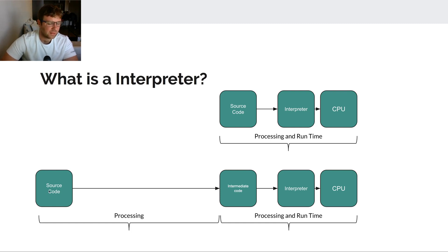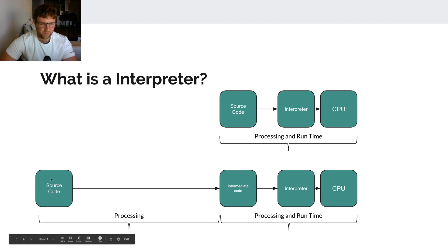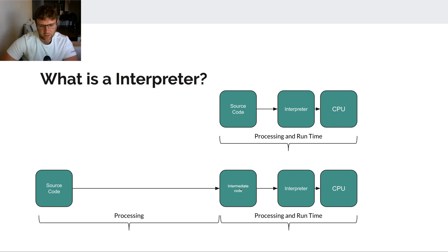Another version is where we write the source code once and it compiles down to an intermediate code that an interpreter can understand. This happens a lot in Java — Java has an interpreter called the Java Virtual Machine, which is a program compiled to run directly on the CPU. The JVM knows how to run Java bytecode, which is that intermediate code. During the phase where we compile down to that intermediate bytecode, some optimization and syntax checking can happen — similar phases to a compiled language, but there's still a layer between our code, the interpreter, and the CPU at runtime.